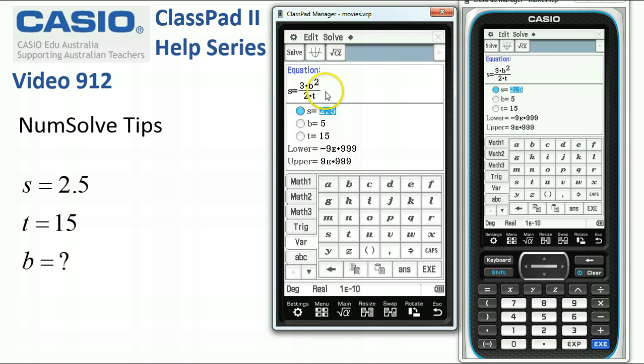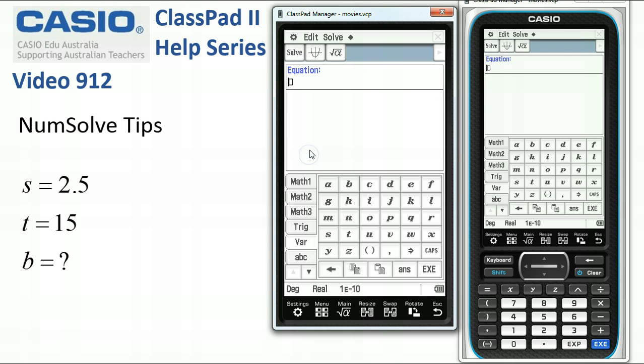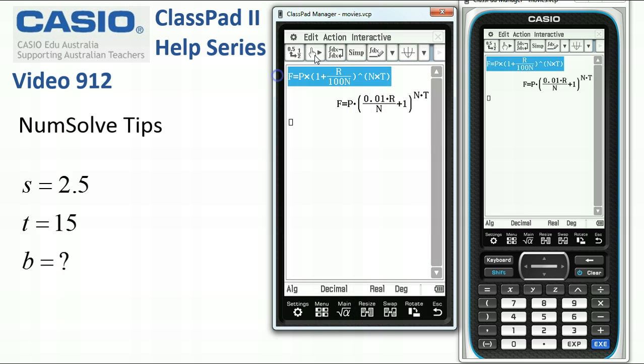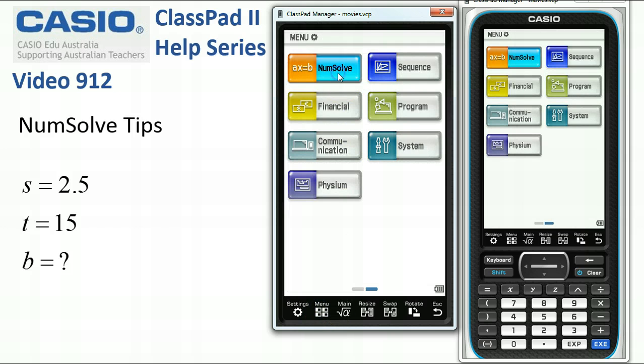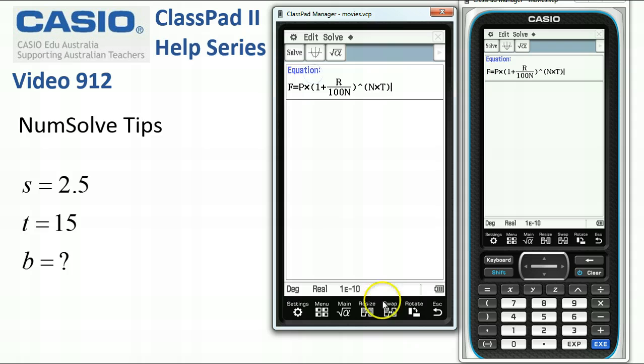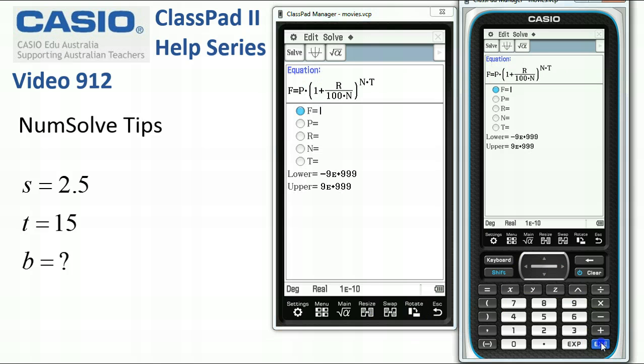Now, the other one is some formulas can be hard to solve. So I'm just going to clear this one out of the way and nip back into main and grab a copy of this formula, edit, copy, back into NumSolve and edit, paste and tap execute over here.